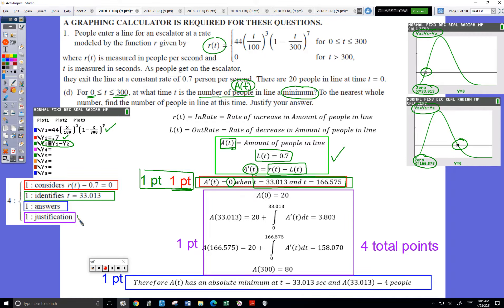For the justification, I simply now need to compute the number of people in line at each of those key times. So here's the key times. The other key times, of course, are the beginning and the end. So I've computed the number of people in line at all key times.